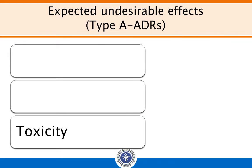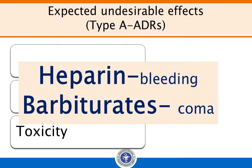The third expected undesirable effect is toxicity — an exaggerated form of side effects — which occurs predictably either due to overdoses or after prolonged use of the drug. The reason could be pharmacodynamic, such as bleeding due to high doses of heparin or coma due to high doses of barbiturates. Sometimes the reason may be pharmacokinetic, like crystal urea due to precipitation of sulfonamides in acidic urine, or nephrotoxicity due to gentamicin.